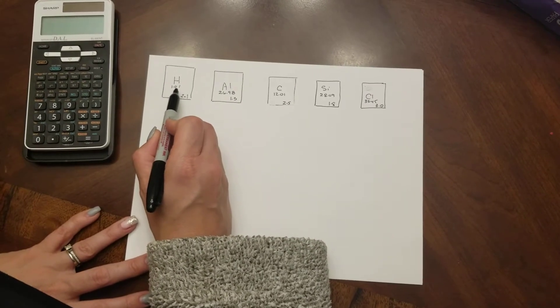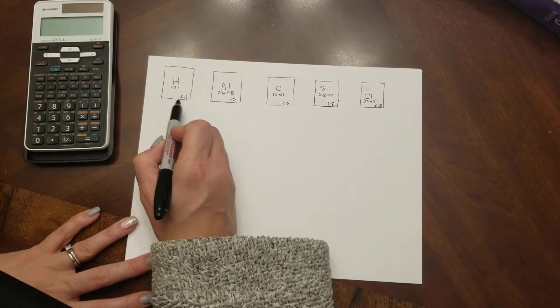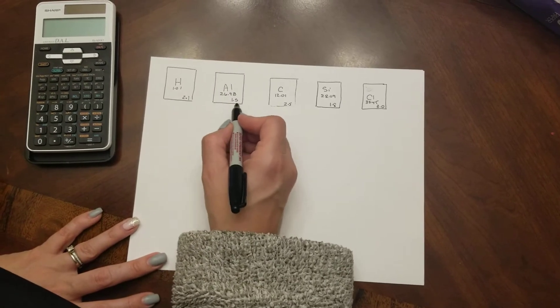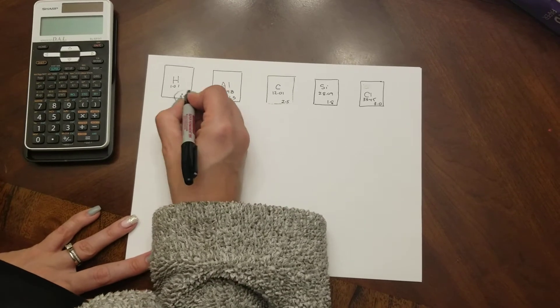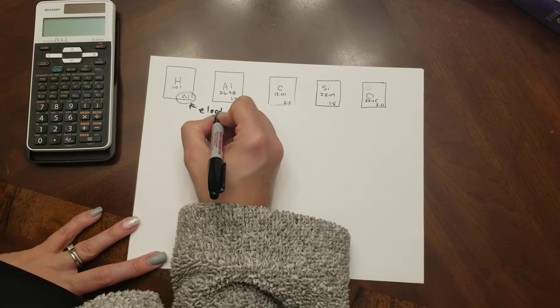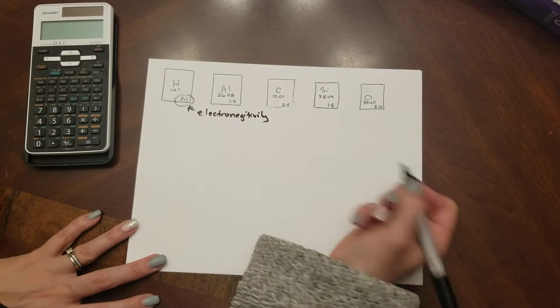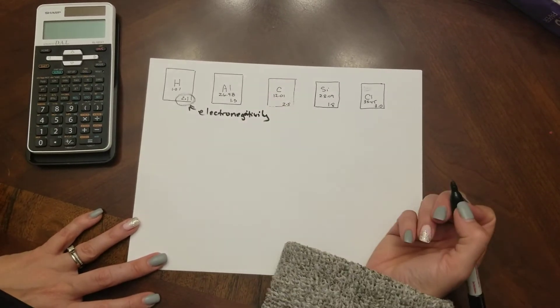Under the symbol for the element typically you'll find its atomic mass and very often in the bottom corner you're going to find the electronegativity. So this little number here in the bottom corner is your electronegativity for the element.